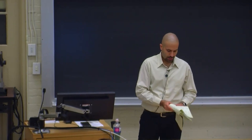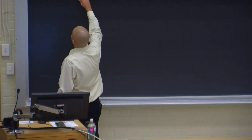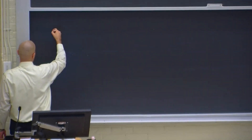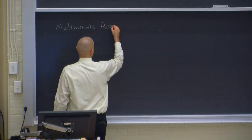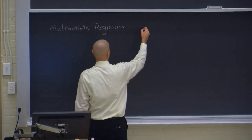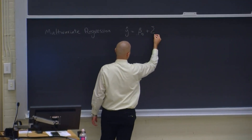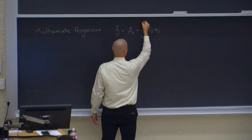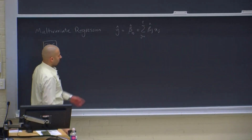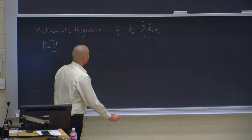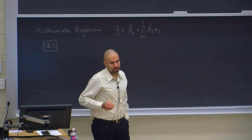Today we're going to talk about linear model selection and regularized fitting. You may remember multivariate linear regression. In multivariate regression, we had y-hat, which we estimate using this function. Using ordinary least squares (OLS), we estimate these beta parameters. This is very simple and useful, but there are situations where we want something more than multivariate regression.